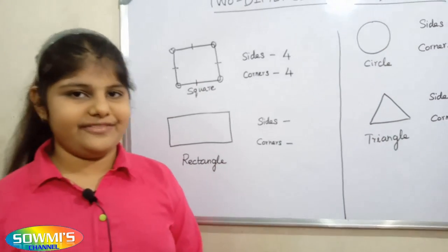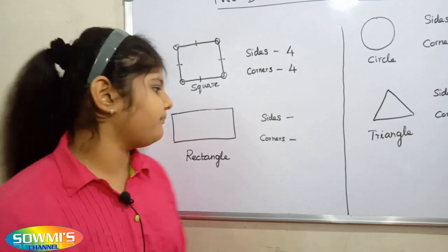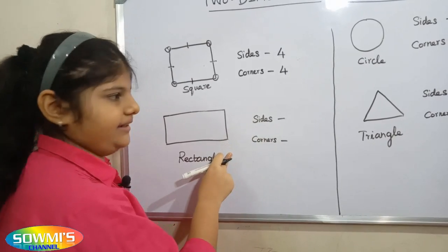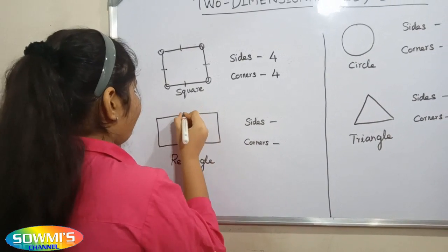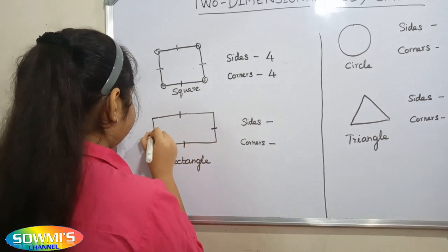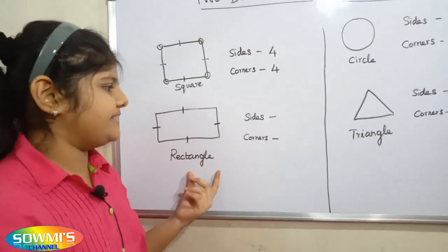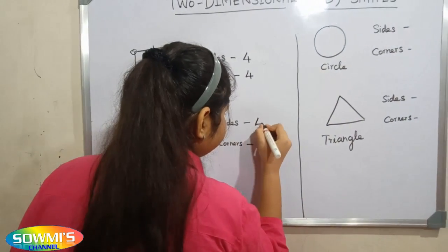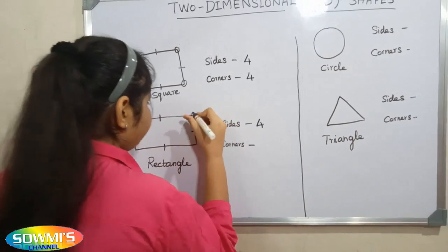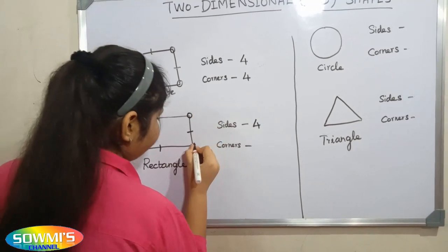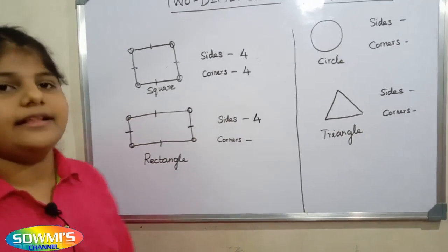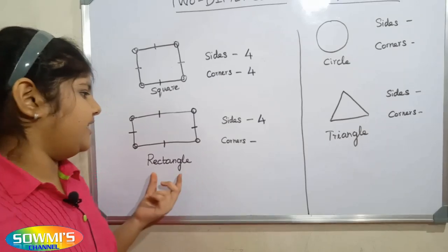Next we will take a rectangle. Counting the sides: 1, 2, 3, 4 — there are four sides. Counting the corners: 1, 2, 3, 4 — there are four corners in a rectangle.